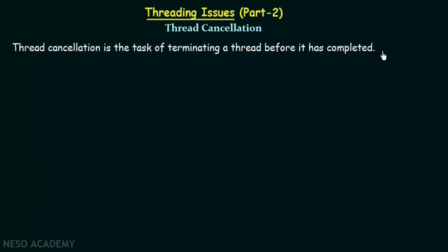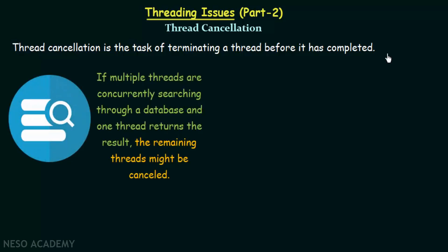Let us take some examples to understand when thread cancellation occurs and what issues we can face. In the first example, if multiple threads are concurrently searching through a database and one thread returns a result, the remaining threads might be cancelled. Once one thread finds the value, the result is already obtained, so the remaining threads can be cancelled as they don't need to continue searching.